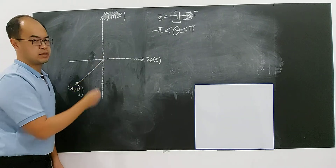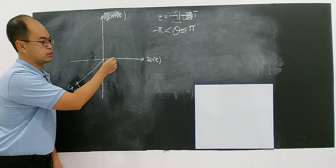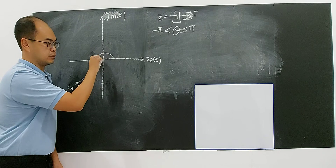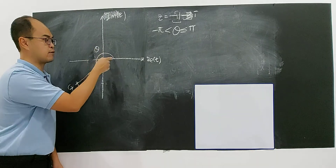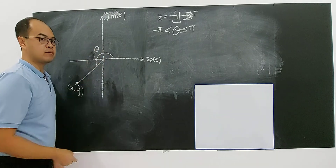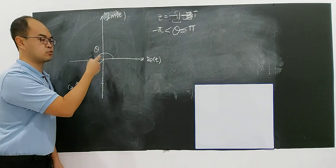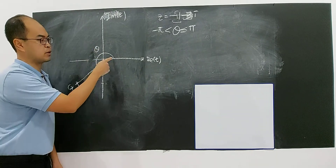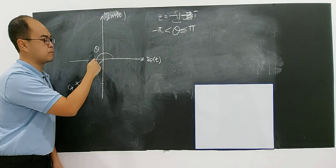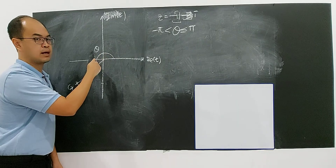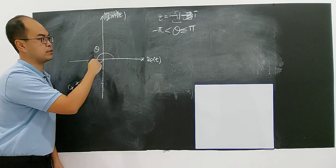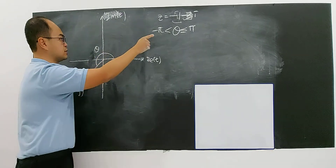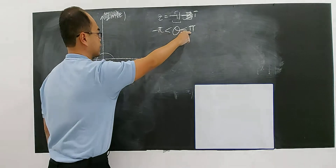So, where should the argument be? Will it be correct if I write it this way? No, this is wrong — because this is already more than 180. More than 180. The range is defined up to 180 only.